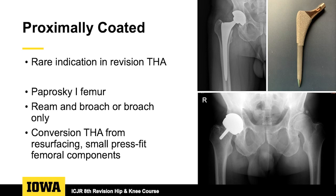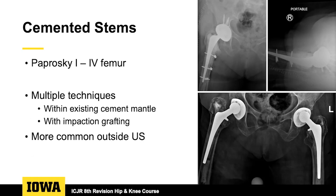Occasionally very small press-fit femoral components. The most common setting I've used this in is in the acute revision patient who has a periprosthetic fracture — they had a porous-coated stem that you can take out, cable, and place back down. Cemented stems still have a role in revision on the femoral side.